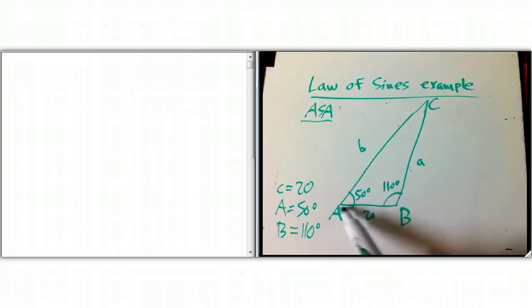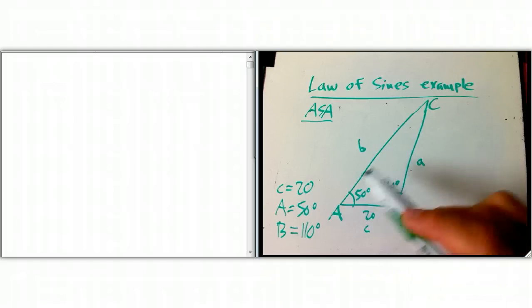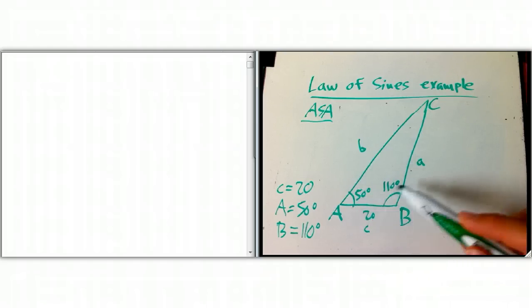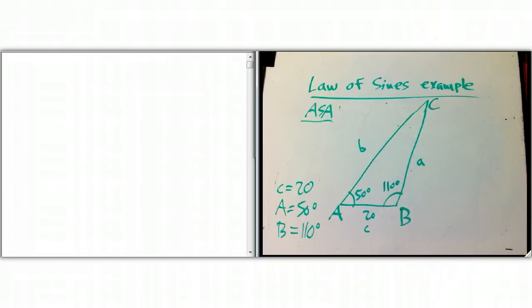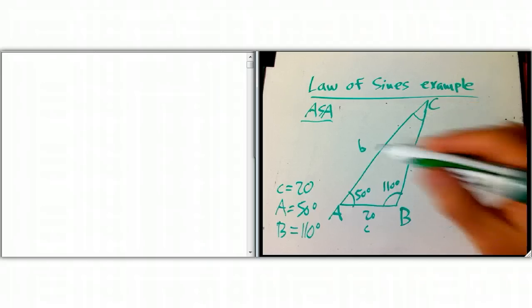What I've got is this distance, this is side little c, because it's opposite angle big C, and that's known to be 20. I've got an angle of 50 degrees here, an angle of 110 degrees here, and I want to find all the rest of this stuff. I want to solve the triangle. I want to find this angle, big C, and side little a and side little b.